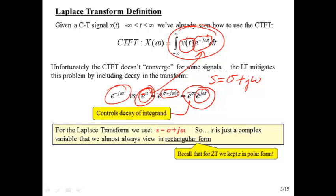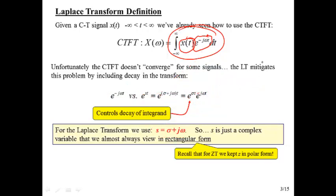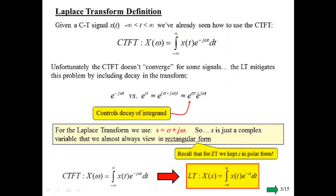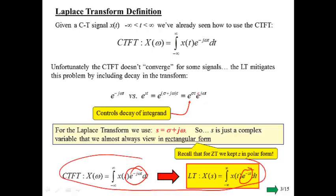So s equals sigma plus j-omega — s is just a complex variable, and we will almost always think of it in terms of its rectangular form, unlike z, which we almost always kept in polar form. Making this change, e to the minus j-omega-t gets changed to e to the minus st, and you can see the similarities between the Laplace transform and the Fourier transform, just like we could see similarities between the Z transform and the DTFT.